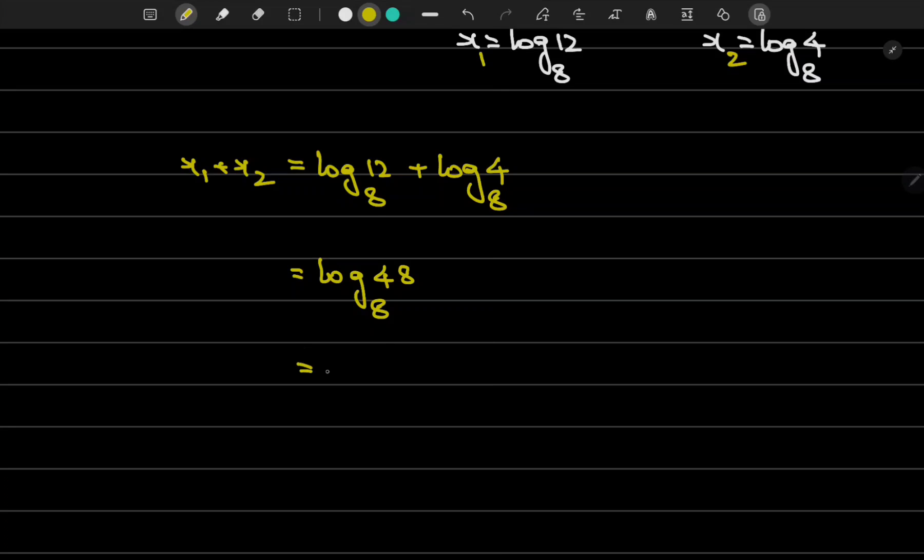Now 48 can be written as 6·8, so log₈(6·8).